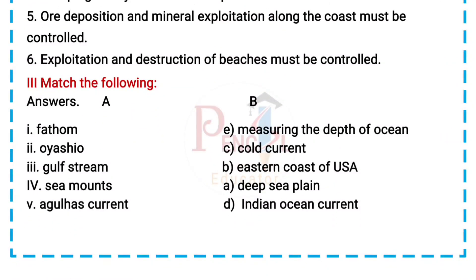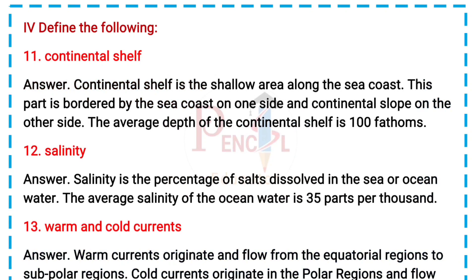3. Match the following. Answers: 1. Fathom — e. measuring the depth of ocean. 2. Oyashio — c. cold current. 3. Gulf Stream — b. eastern coast of USA. 4. Sea mounts — a. deep sea plain. 5. Agulhas current — d. Indian Ocean current.